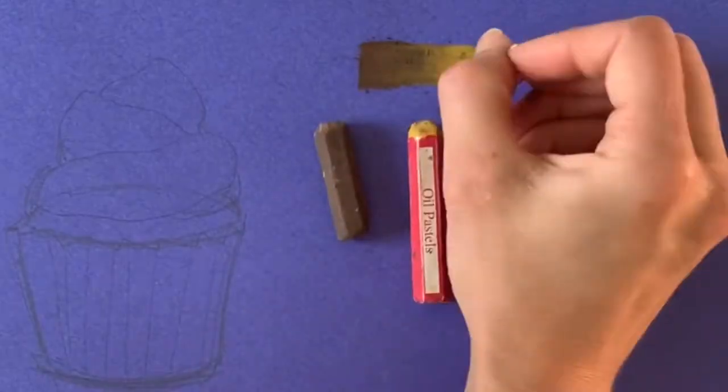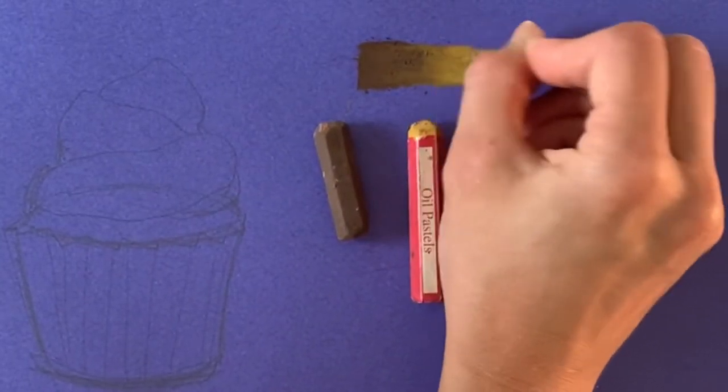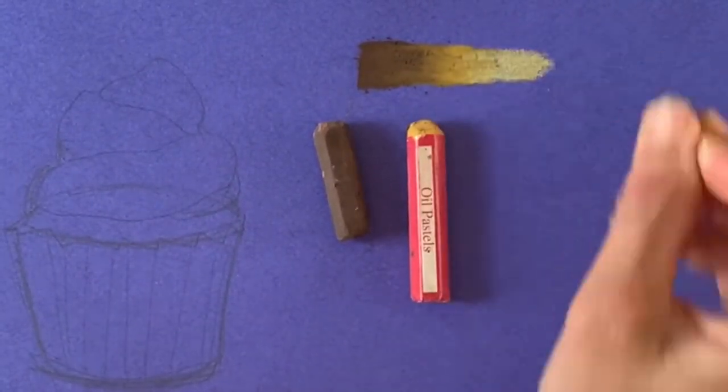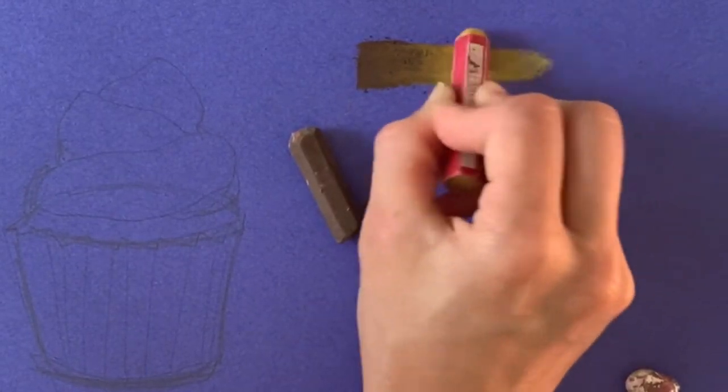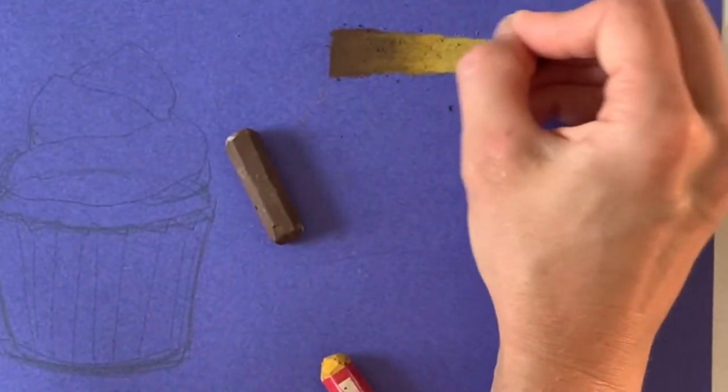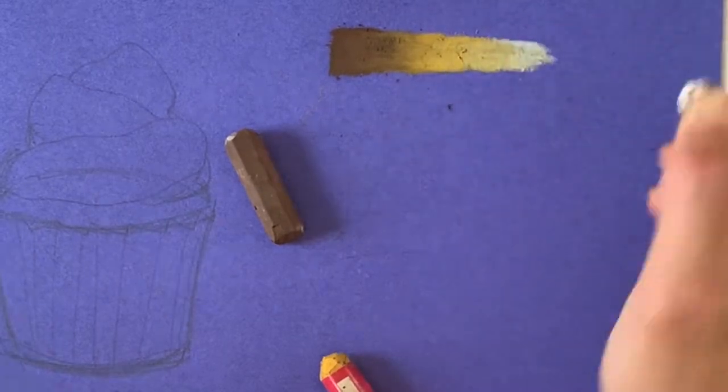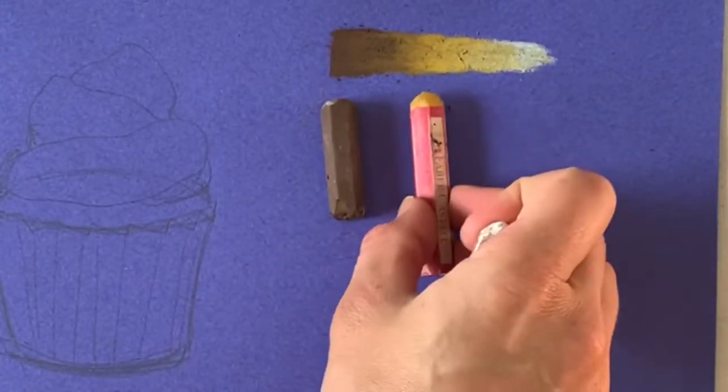The trick is if you want one color more dominant than the other, blend over the original color with that first. And you always end with white so that you have a beautiful highlight, and also food is very light in color, especially a vanilla cupcake.